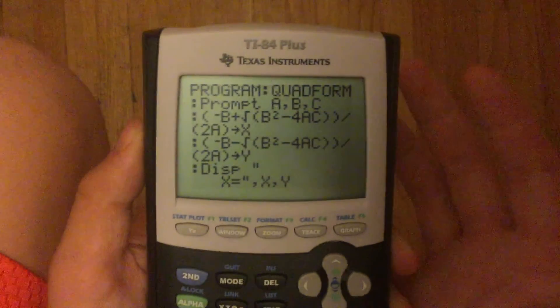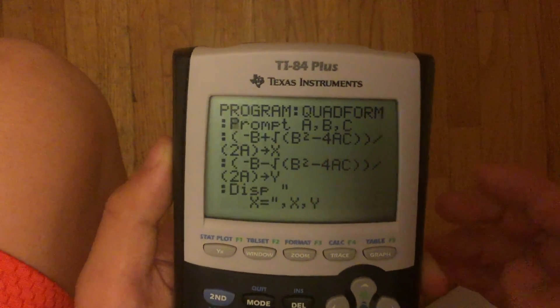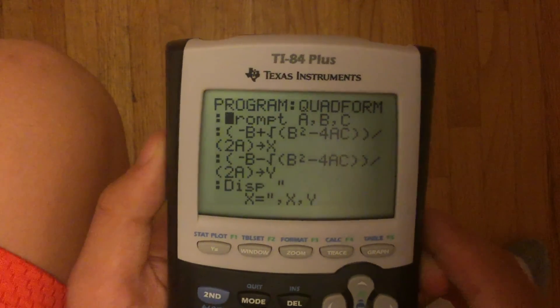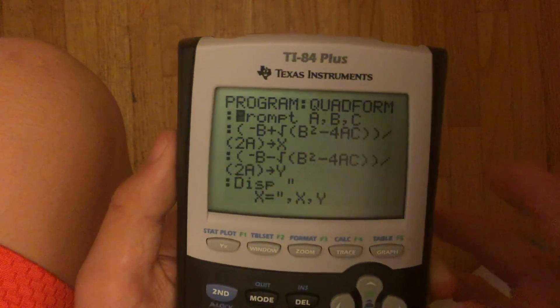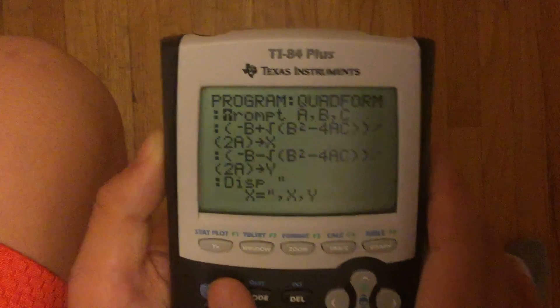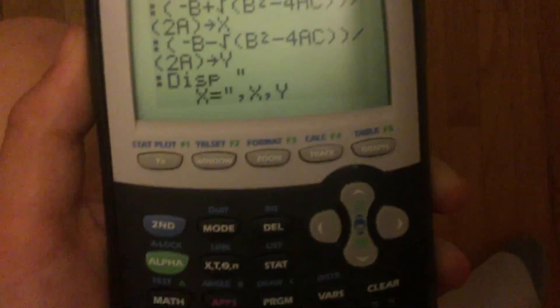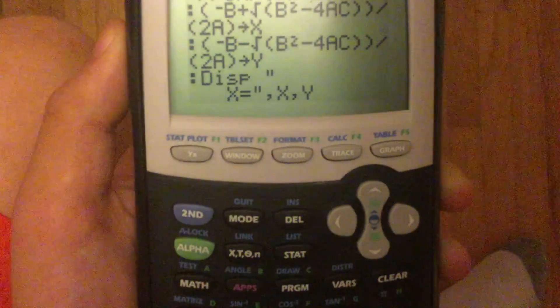Now be sure, I just want to warn you, after you've finished programming, whatever you do, do not click clear to quit the program. Because that will delete that line of code. Instead, you want to hit second, quit. Or second mode, which will activate the quit function, which will just quit out of it.